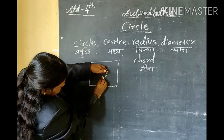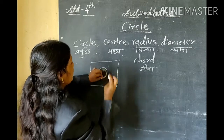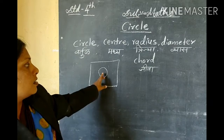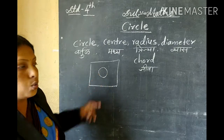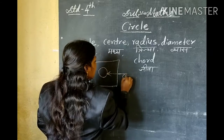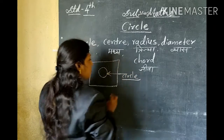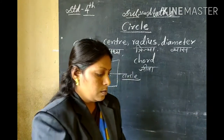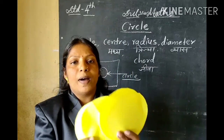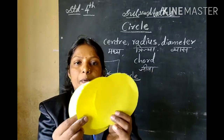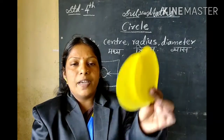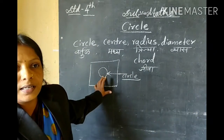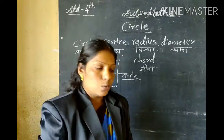Press it with a pencil and we will get the shape of a circle. We will make two, three, or four parts of the circle. Make three or four circular shapes, then cut them with scissors.